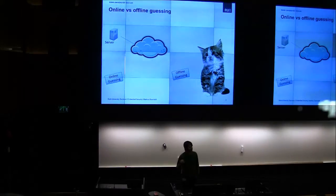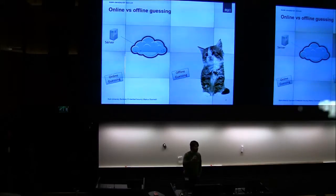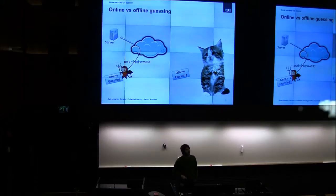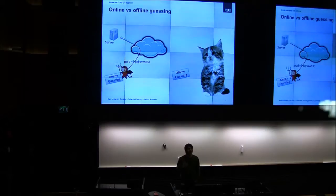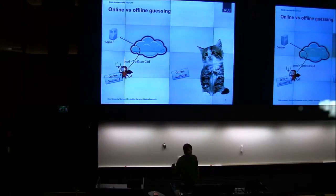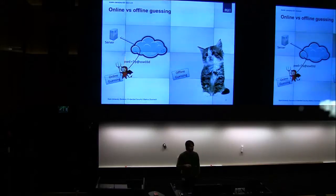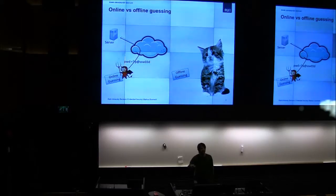To get our terminology in line, when talking about passwords and password security, we usually distinguish between online and offline guessing. Online guessing is when the adversary has access to a server and can query it — for example, asking whether a given password is correct for a given user. The server typically answers no, and you can repeat the query. These online attacks are easily counterable by rate limiting, filtering based on IP, time, patterns, and so on.